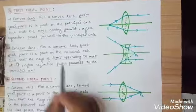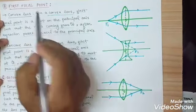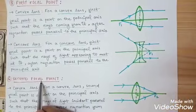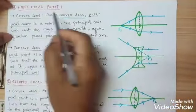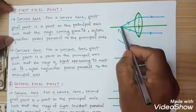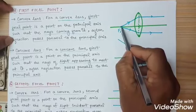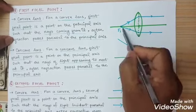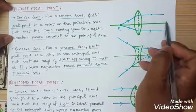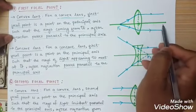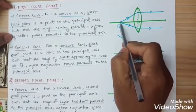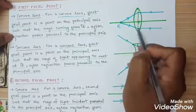Now come to focal point. There are two focal points: first focal point and second focal point. The first focal point of a convex lens is the point on the principal axis such that rays coming from it, after refraction, pass parallel to the principal axis. This point is called the first focal point of the convex lens.